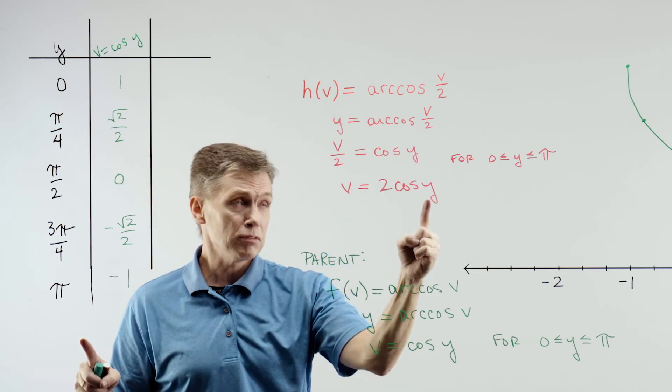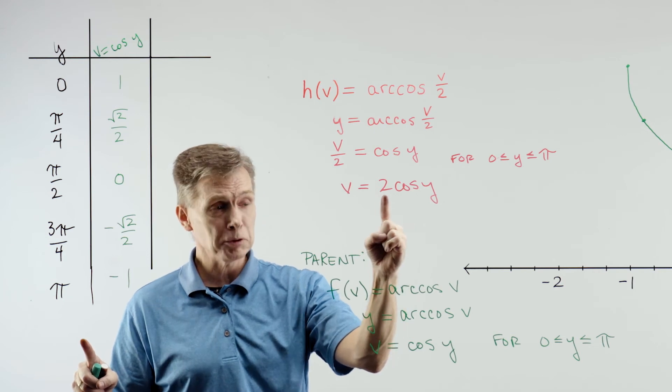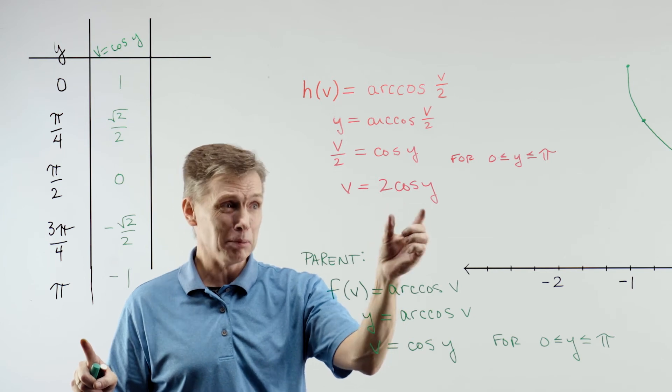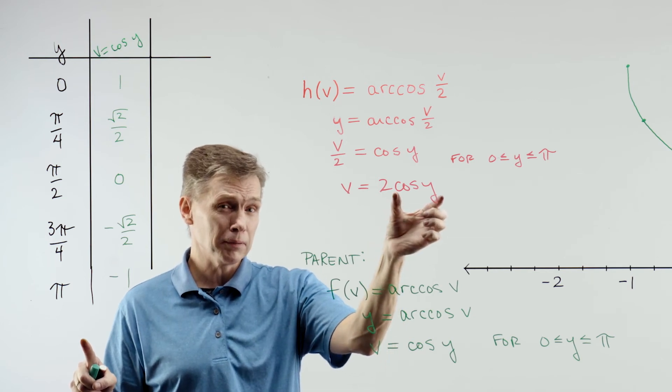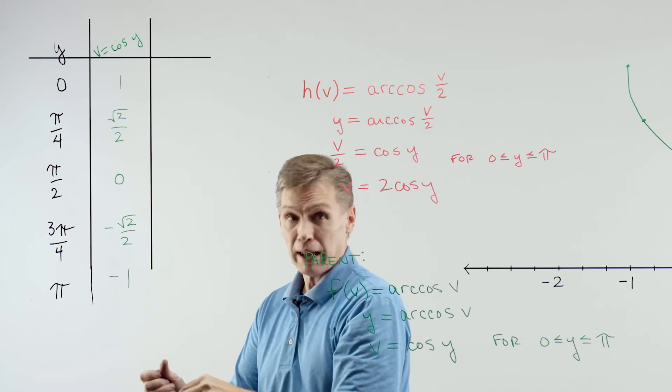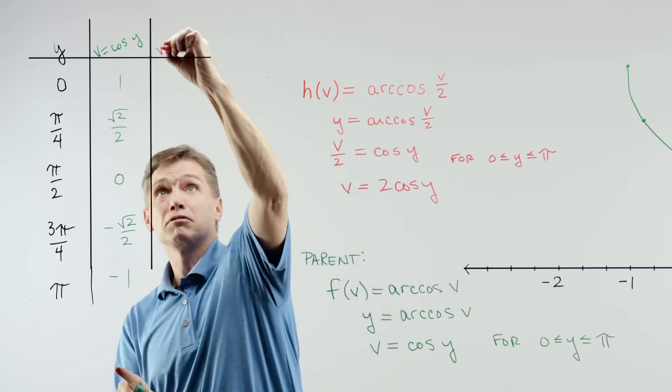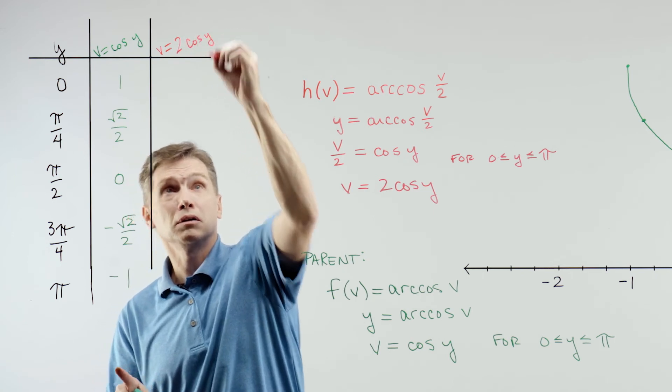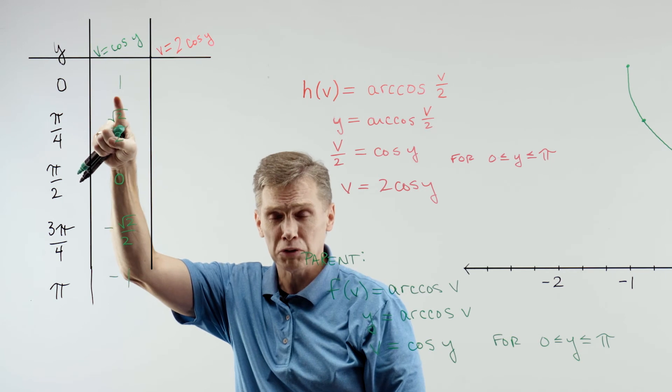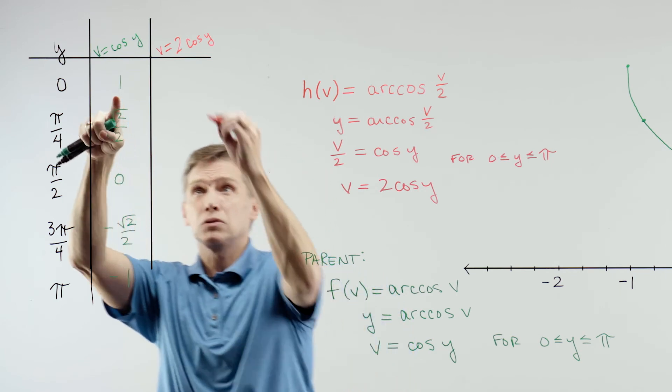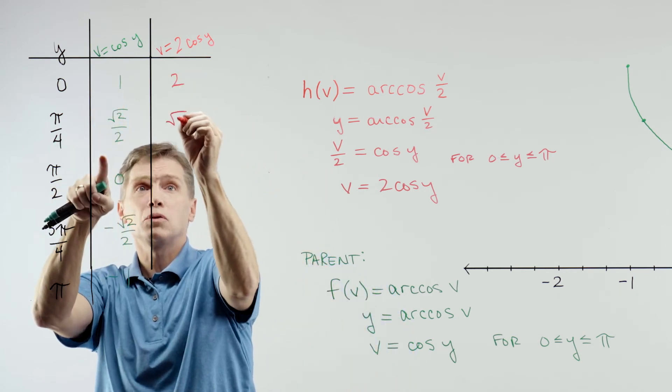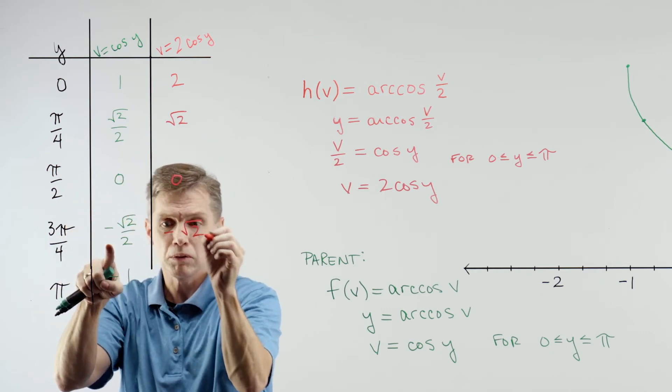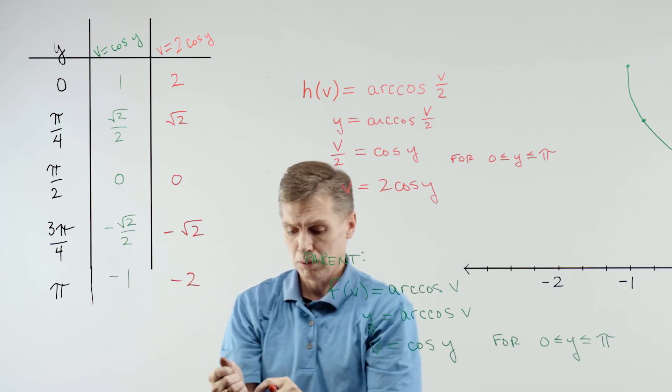Okay. Plugging them in here, finding out what the cosine is, and then multiplying by 2. Okay. And it gets better than that for us for this problem, is that we already did the cosine of y. That's what this middle column is. So now I can find my v equals 2 cosine of y, by just doubling these values in the middle column. So this is going to be a 2, this is a square root of 2, 0, negative square root of 2, and negative 2. Okay. All right.